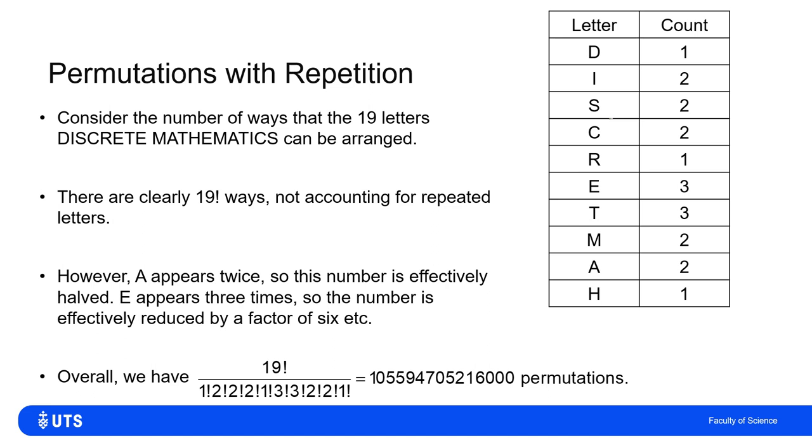But if I work out the number of permutations acknowledging all of this duplication, then I've got 19 factorial ways without acknowledging that duplication. But then I've got to divide that by—well, the fact D isn't duplicated doesn't affect it. So I divide by one factorial, division by one. The fact there's two I's means I have to divide by two factorial. The fact there's two S's means I have to divide by two factorial, two C's. So divide by two factorial, and so on. The E and the T appears three times. So I have to divide by three factorial to correct for those.